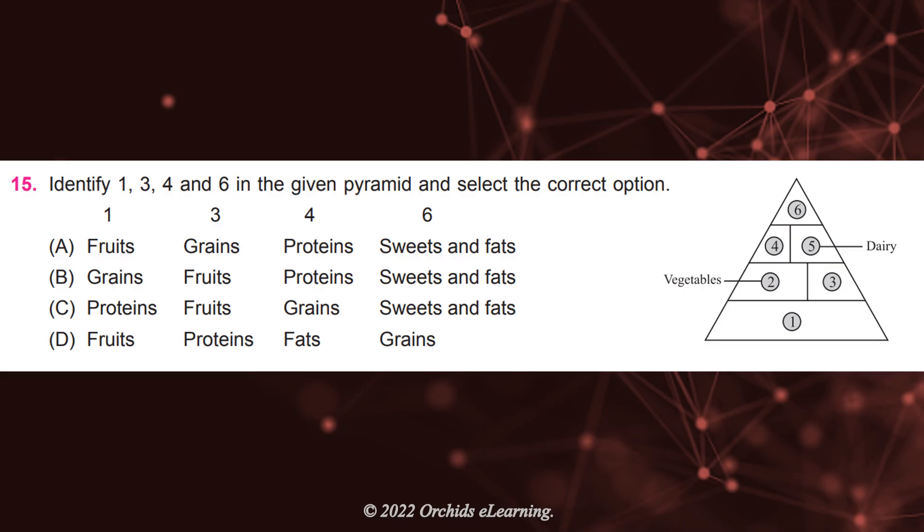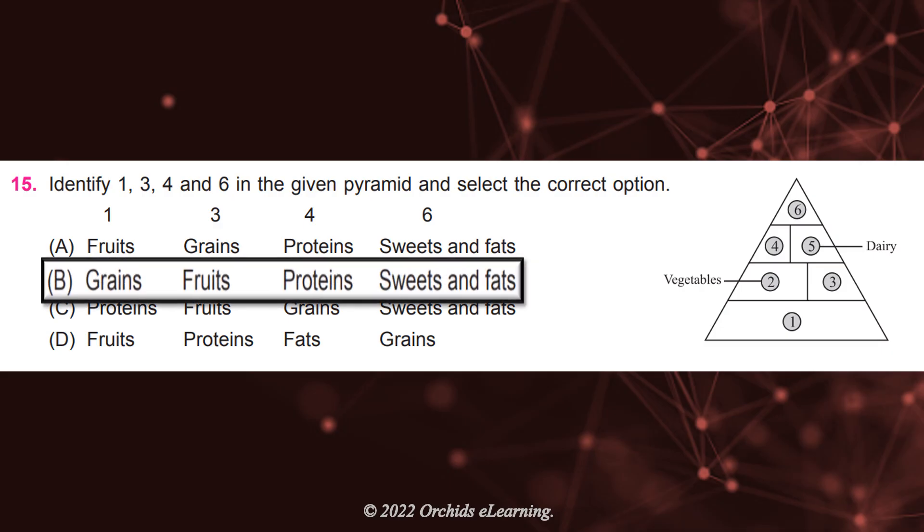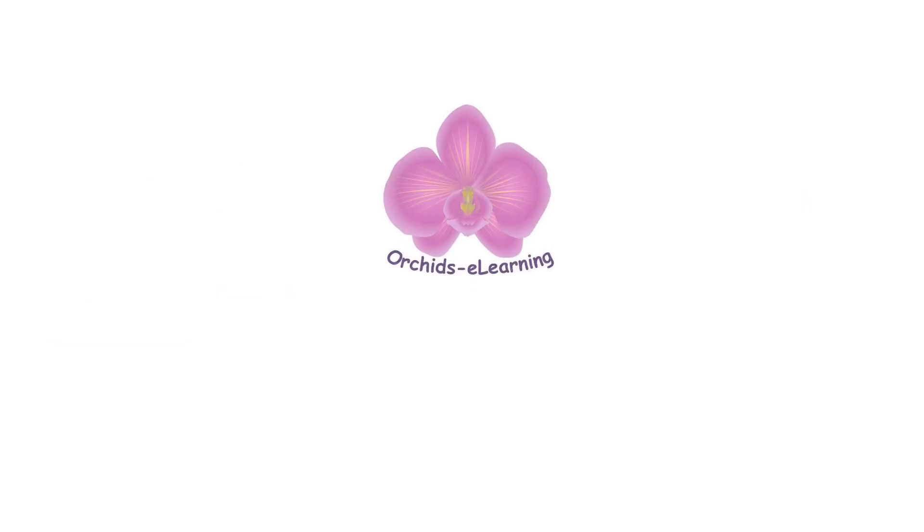Identify 1, 3, 4, and 6 in the given pyramid and select the correct option. Answer: B, 1 is Greens, 3 is Fruits, 4 is Proteins, and 6 is Sweets and Fats.